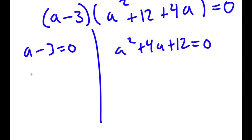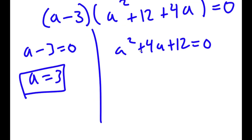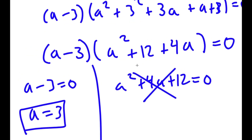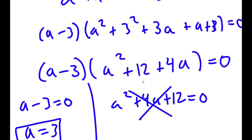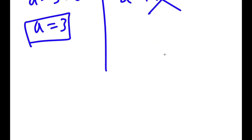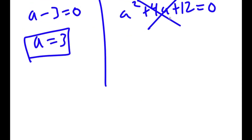This gives me two equations: a minus 3 equals 0, which gives a equals 3, and a² plus 4a plus 12 equals 0. For the quadratic, using the quadratic formula gives the square root of a negative number, so there is no real solution. Therefore, a equals 3 is our only solution.